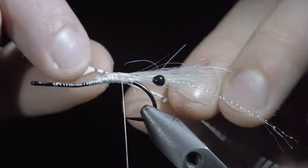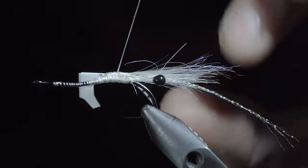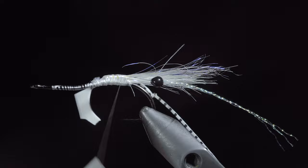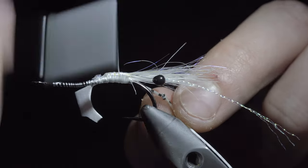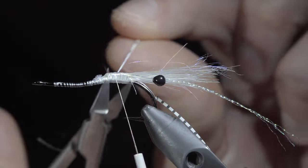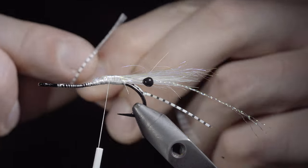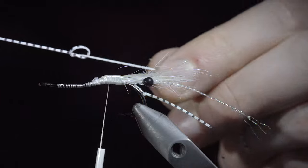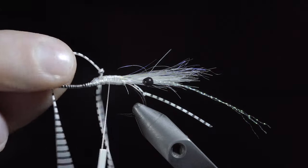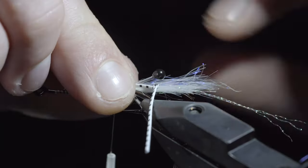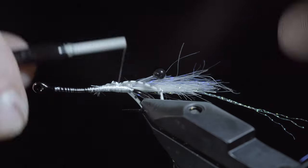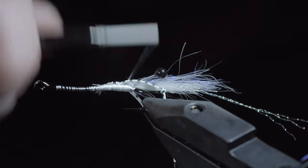We will then grab some white silicone legs and secure this to each side of our hook. Once complete, snip the excess free and trim the legs to length. To create a bend in our legs, simply add one overhand knot, pull it tight, and this will give it a leg-like appearance. Secure the silicone leg to the other side and trim it to length.